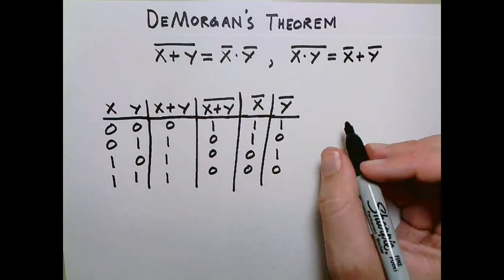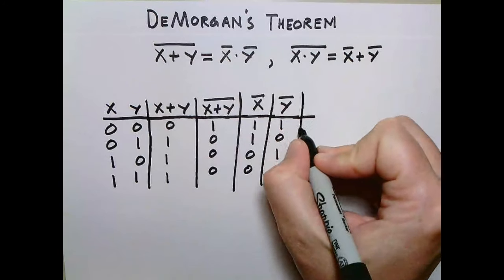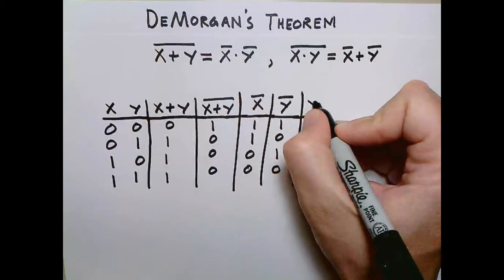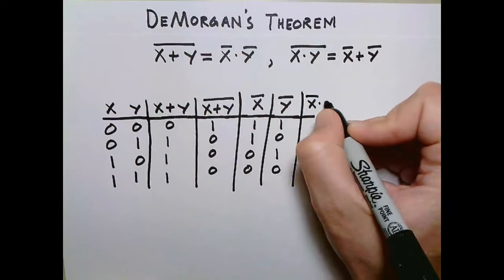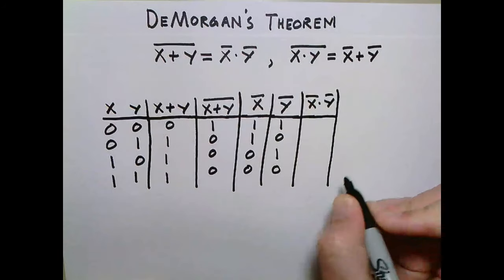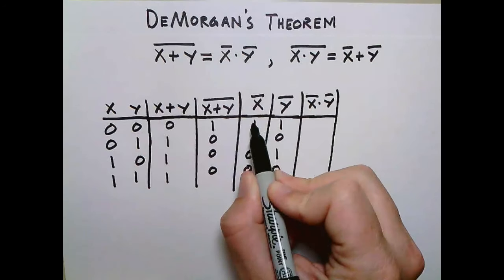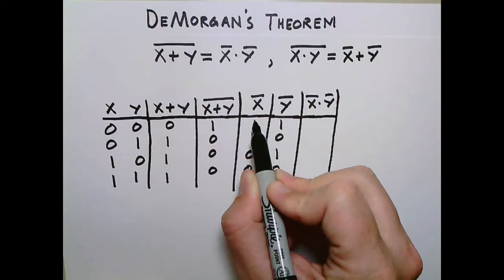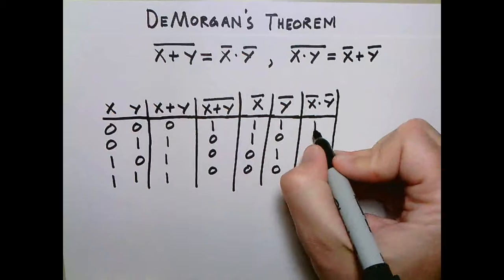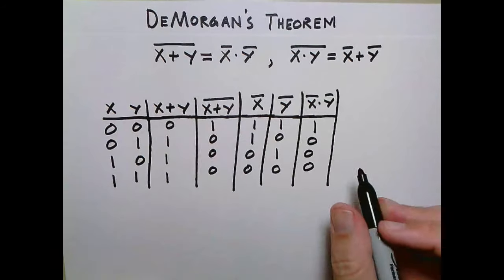So now we're going to do a couple things. Let's do first this one and show that this relationship is true. Let's do not x and not y. So we're looking for where both of these columns are equal to 1, and it turns out just in this one case, up here, not x is 1, not y is 1, so we get 1, 0, 0, 0.